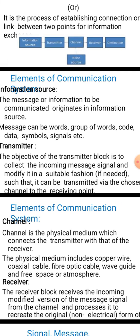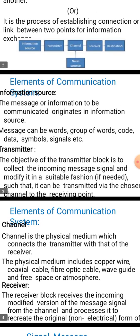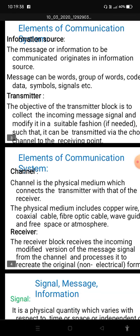The third module is the channel. The output of the transmitter, called the transmitted signal, is passed through a channel to reach the receiver. The channel may take different forms depending on the nature of the communication system. It may be a twisted pair of copper wires, a coaxial cable, a radio link, optical fiber, or even a satellite communication link.